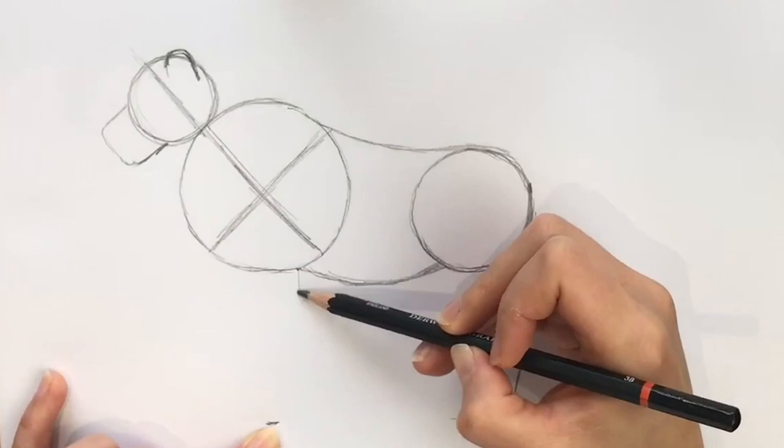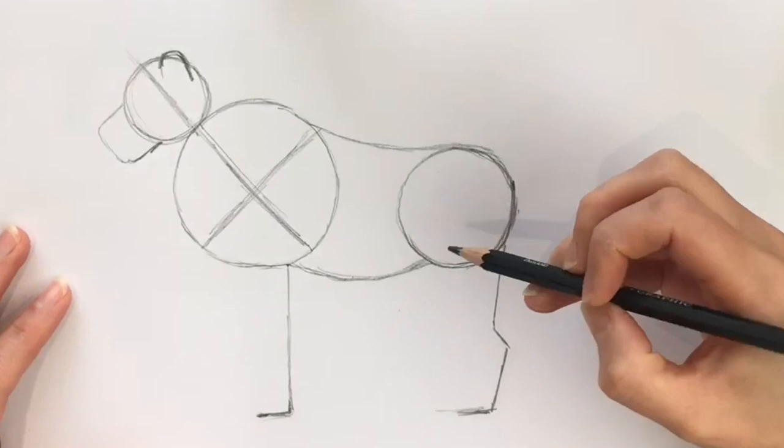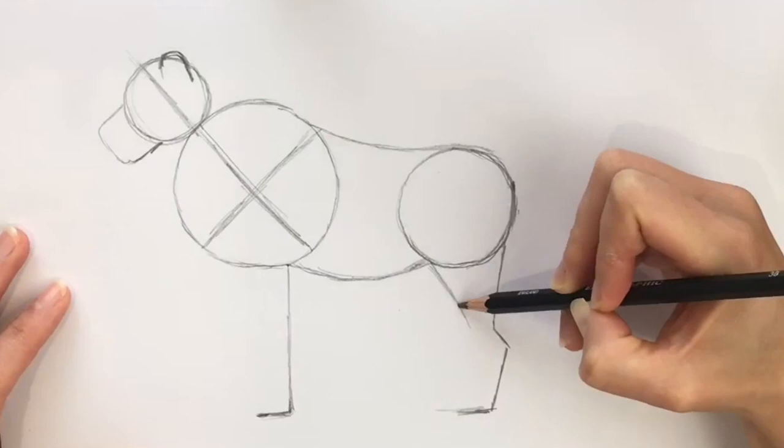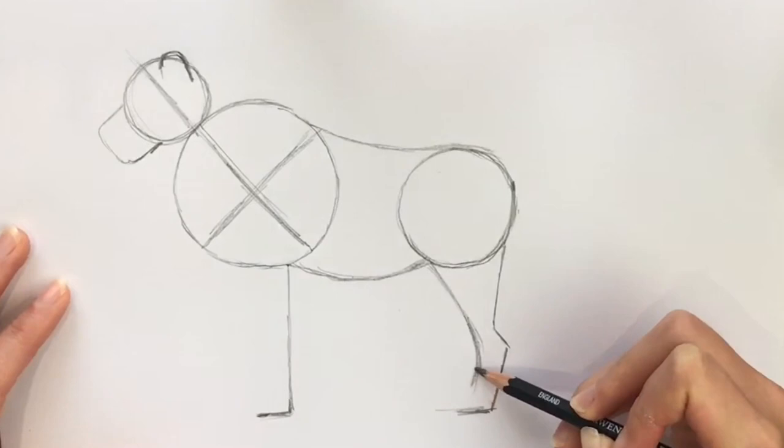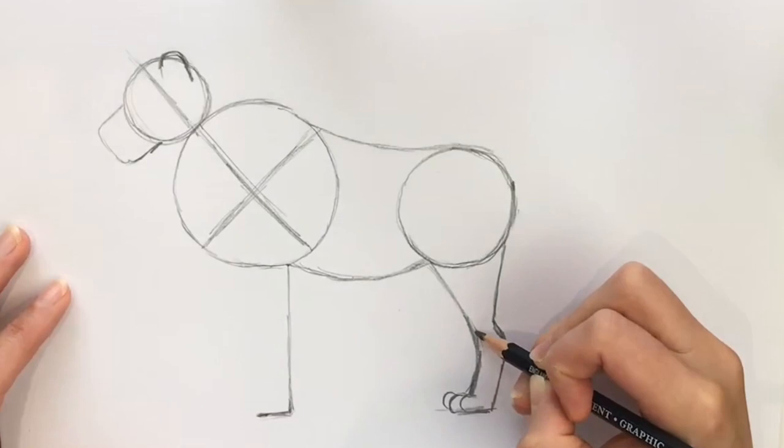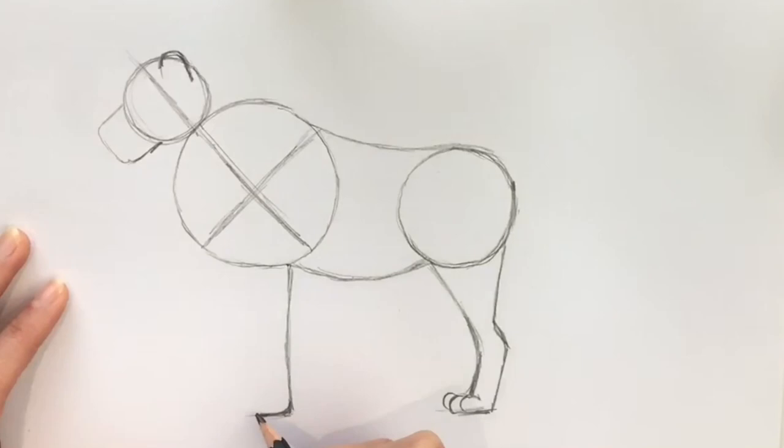Now we're going to draw the hind leg properly. So where this line from the belly hits this smaller circle, we're going to start the hind leg. So this is going to come in a curved line all the way down to about there. Now we're going to draw the foot, so do a series of curved lines for the foot. Just like so. Now for the front leg, we're just going to make this a little bit smoother, and then at the base we'll draw the foot again, a series of curved lines.